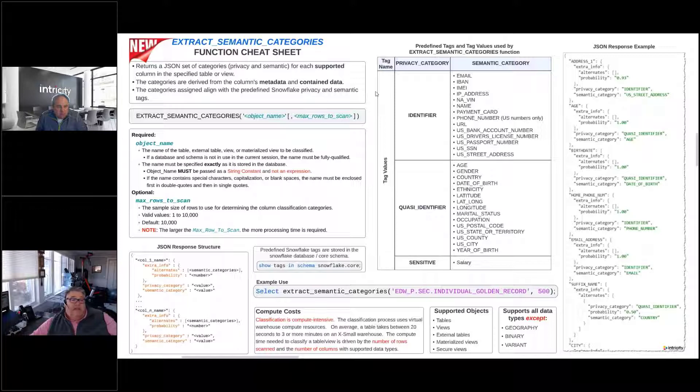In the top right hand or left hand box up here, a couple of things. First of all, when we run this function, it's going to return a JSON structure that will give us a set of categories—privacy and semantic—for each supported column, and we'll talk about that more in a little bit of detail.